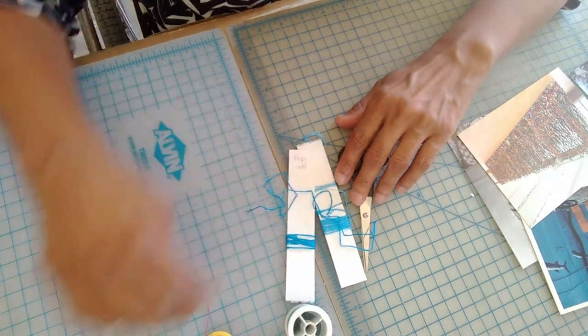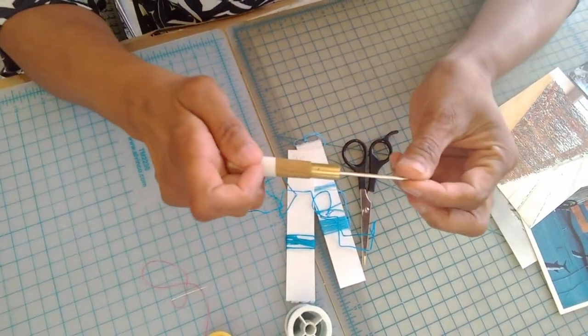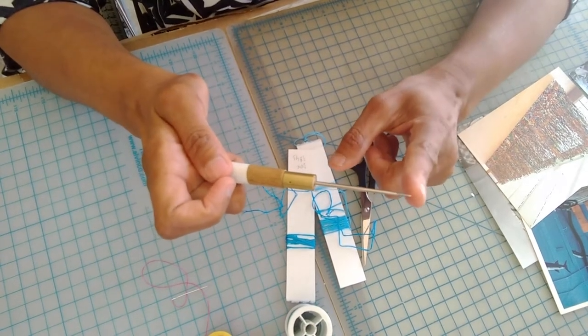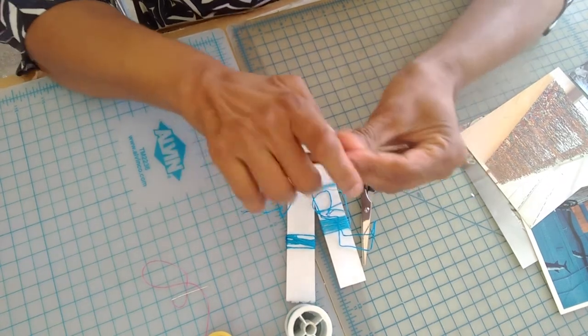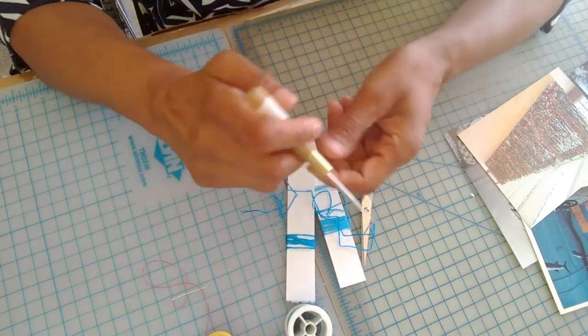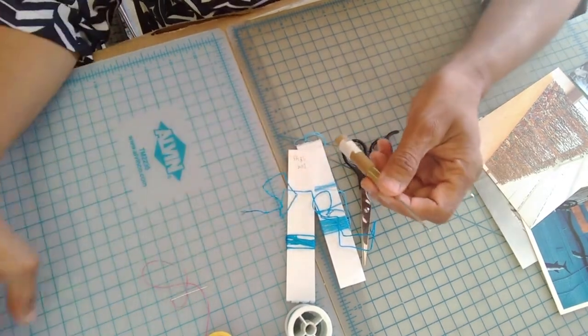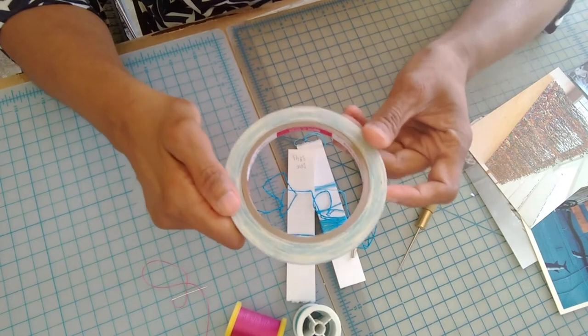I also have a tool called an awl, and an awl is simply a sharp point. You can use a needle if you don't have an awl, but it has a nice handle so you can make holes in the paper as you're embroidering. I also have some double sticky tape and you can use really any tape.